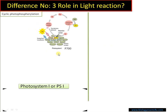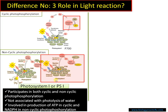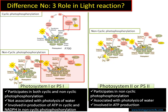The third difference is regarding the role in light reactions. Photosystem 1 is involved in both cyclic and non-cyclic photophosphorylation. In cyclic photophosphorylation, photosystem 1 contributes to the formation of ATP and electrons return back to photosystem 1. In non-cyclic photophosphorylation, electrons are received from photosystem 2 and it forms NADPH. Photosystem 2 is only involved in non-cyclic photophosphorylation and also in photolysis of water — water splitting — which provides electrons and protons to refill the electron hole, and it is involved in ATP synthesis.